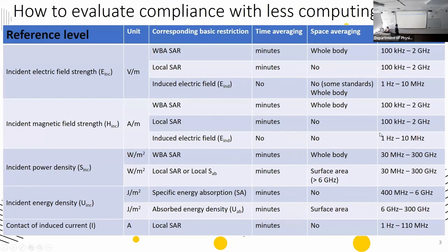According to standards, you can instead calculate not basic restrictions but reference levels. Reference levels are external quantities — the quantity of the field itself. You don't model how the field is interacting with the body. You just calculate the electromagnetic fields themselves, compute some quantities, and compare them with defined limits corresponding to the different basic restrictions.